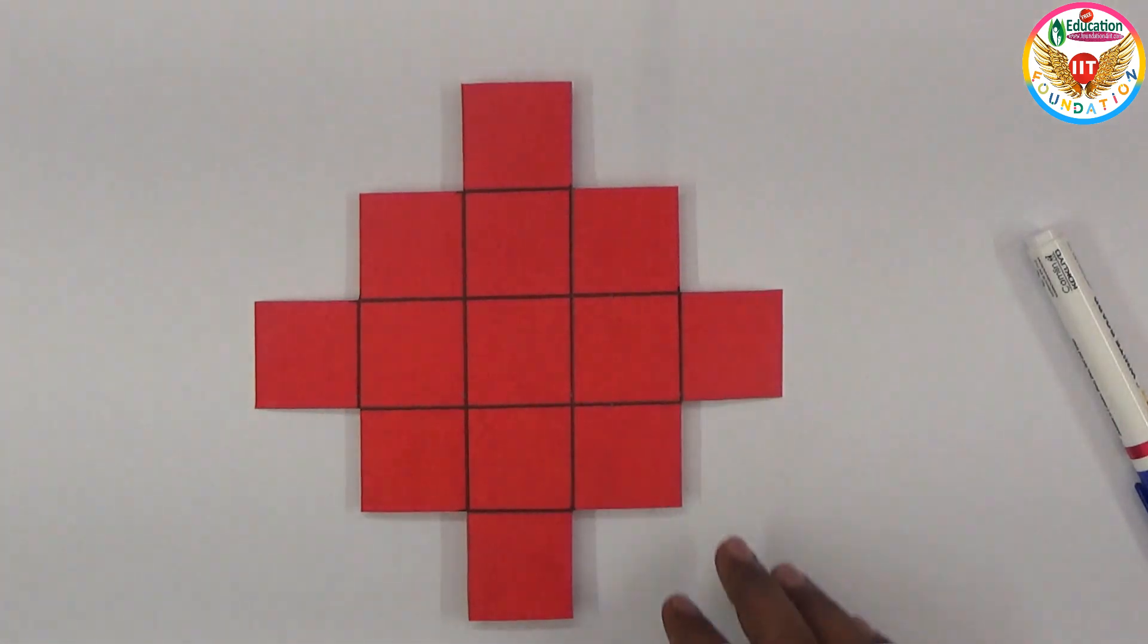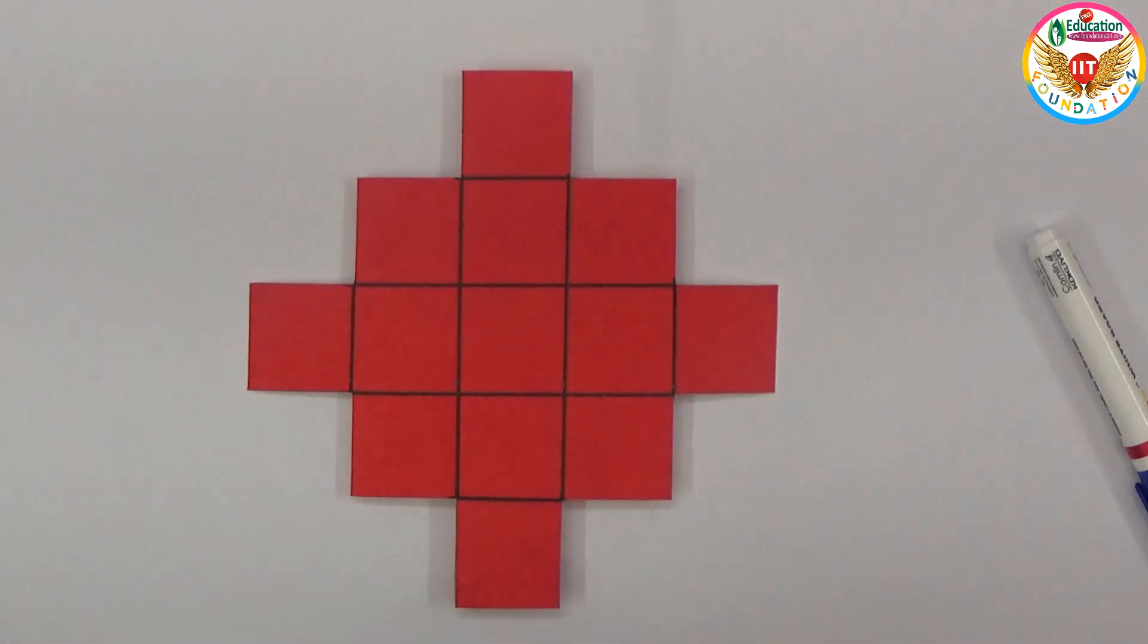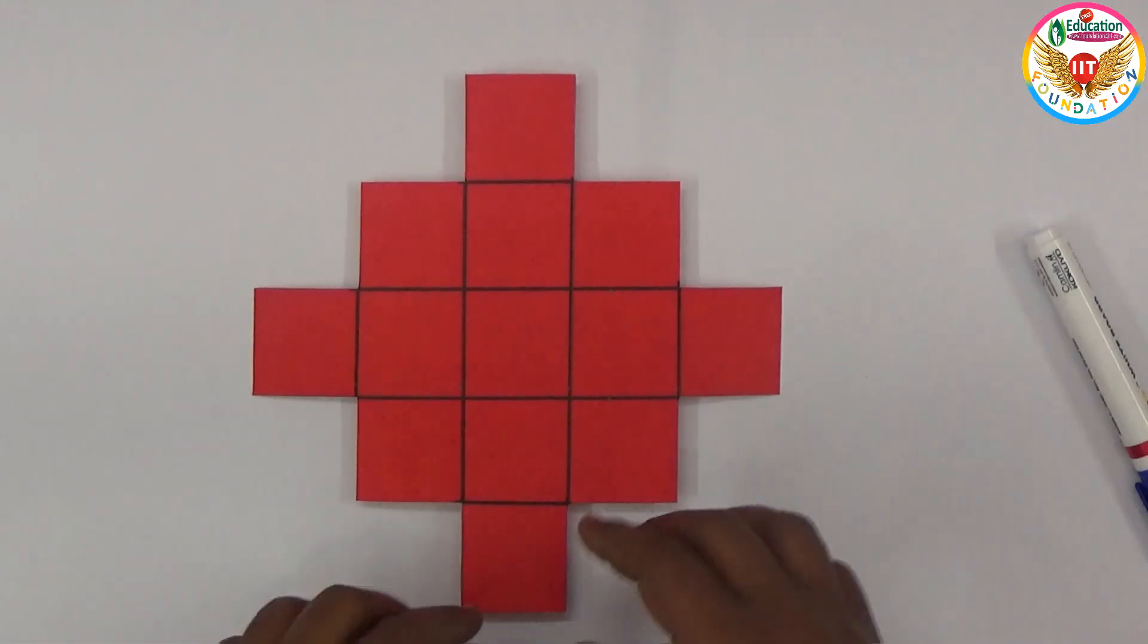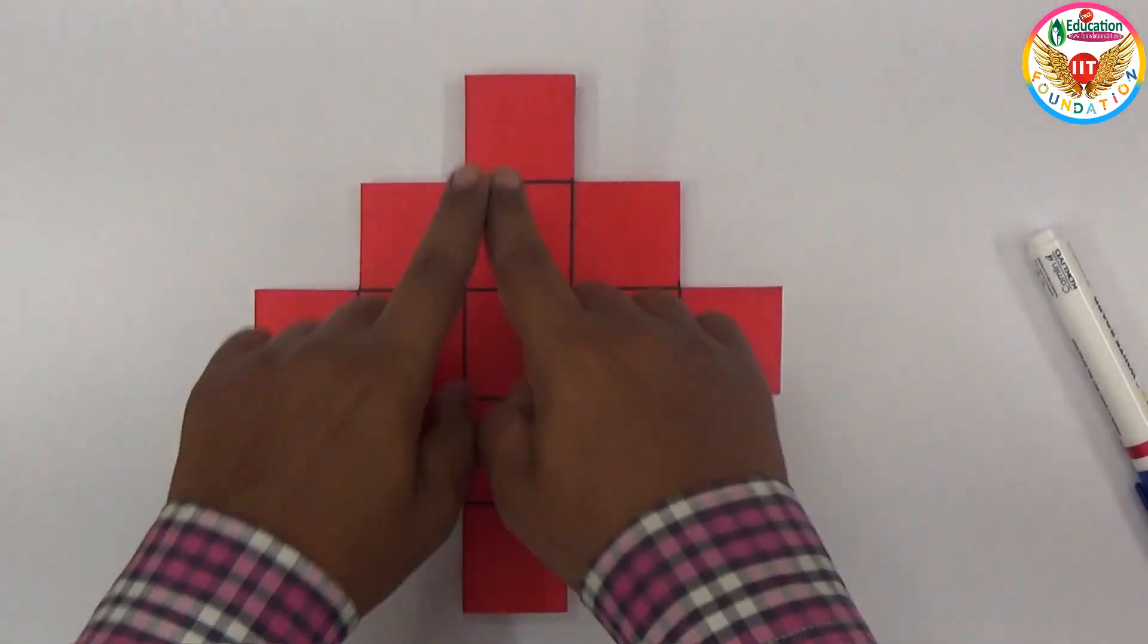So the problem is simple. We need to cut this total part, this piece, with 2 straight cuts. And if you do straight cuts, make 4 equal parts. So that 4 parts if you join together, again it should form a single square.